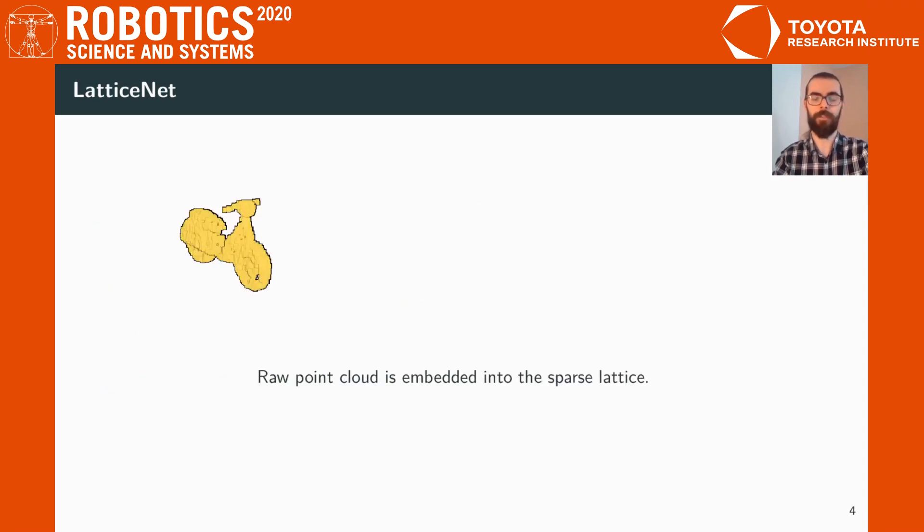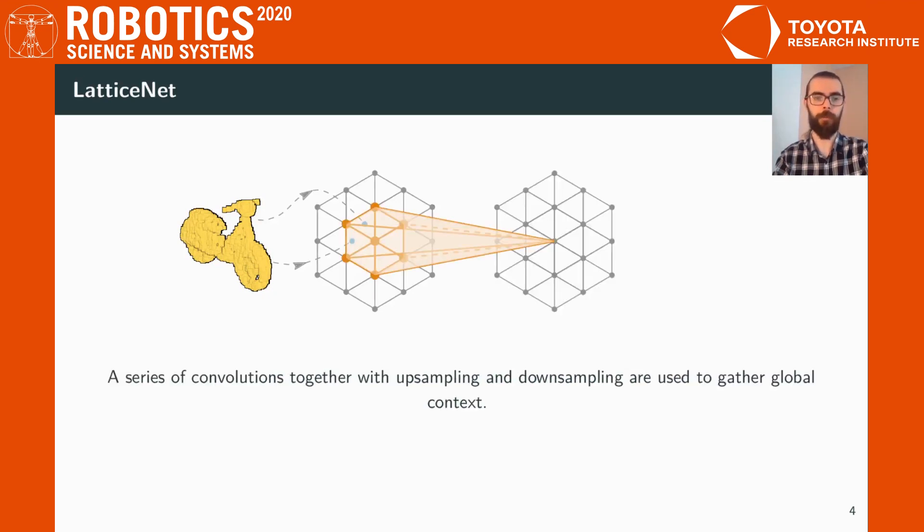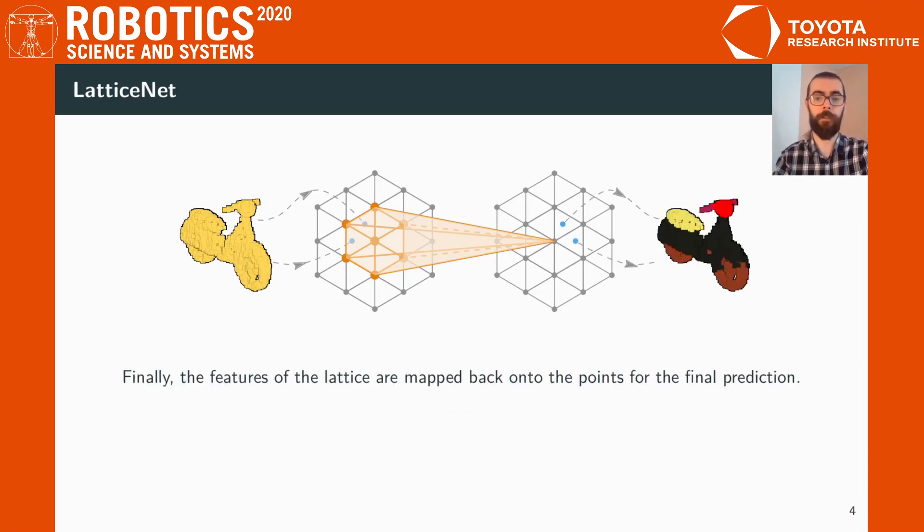Our method takes as input a raw point cloud and embeds it into a sparse lattice. Afterwards, together with upsampling and downsampling operations, we get a more and more global context. Finally, the features of the lattice are interpolated back onto the point cloud for the final prediction.